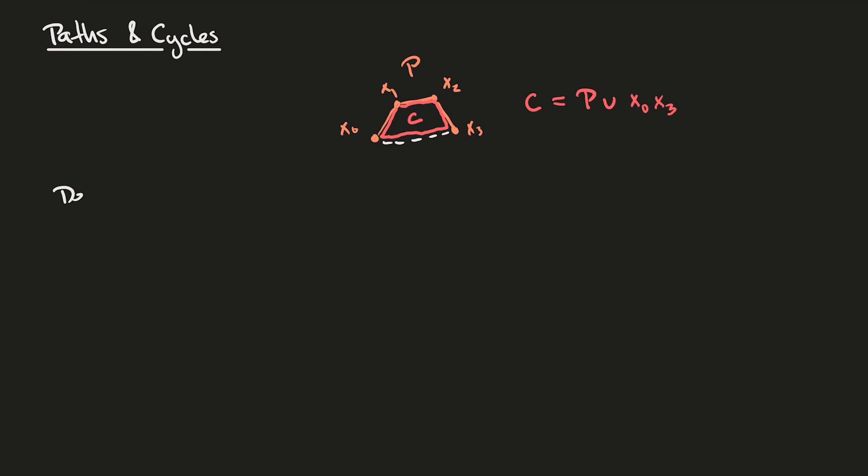In general, we define cycles as follows. If P is some path x0 through xk minus 1, and k is larger or equal than 3, then P union xk minus 1, x0, so this is this edge in the example above, is called a cycle.